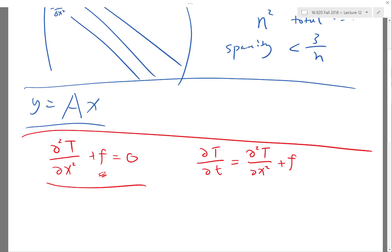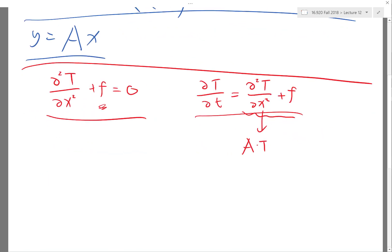Solving this equation does not require any matrix inversions. If you use the explicit scheme, it just requires me to evaluate the right-hand side. And the evaluation of the right-hand side, even if I approximate this with A times T, just requires application of the matrix vector multiplication, which we know how to take advantage of the sparsity.